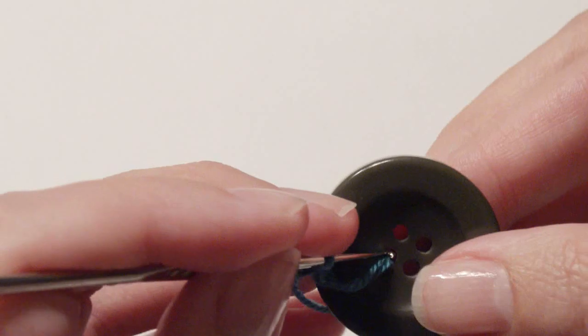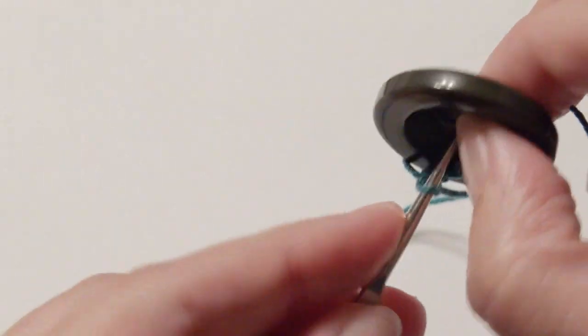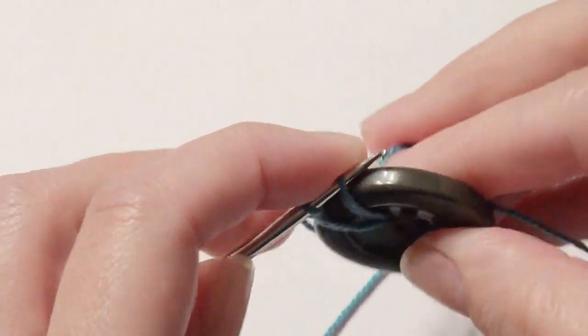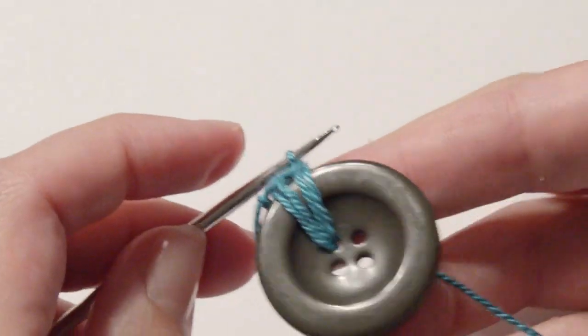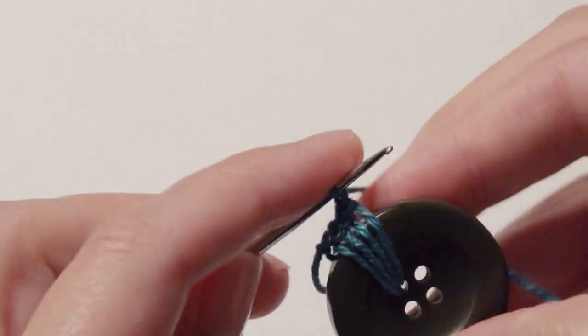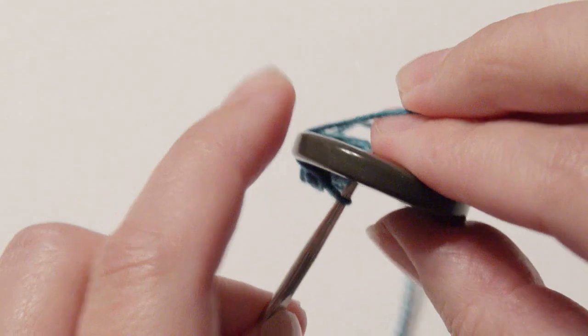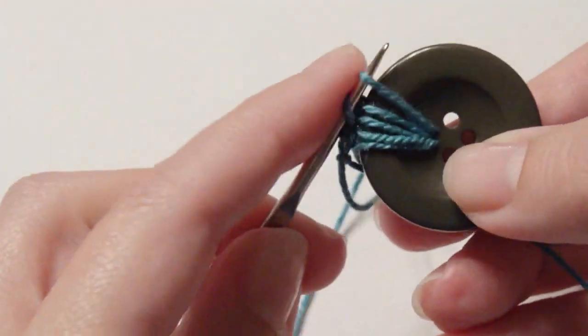And then repeat as many single crochets you want in each circle. I'm only going to go with three. You can go up to four or five, just depends how much you want to cover. So just chain one again, and then insert and pull it through and create your single crochet.